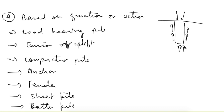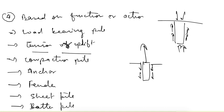Tension or uplift pile: if the pile is placed such that it is moving upwards, then friction is mobilized in the downward direction. This pile is trying to go upward, so it is called a tension or uplift pile.